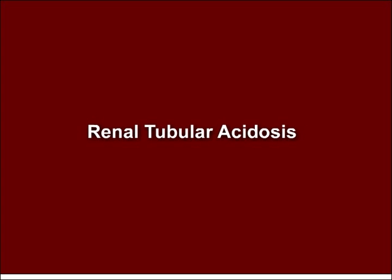Renal tubular acidosis, or RTA, is the result of an inability of the kidney to appropriately acidify the urine. The subsequent accumulation of acid in the body creates a non-anion gap hyperchloremic metabolic acidosis. In this animation, renal physiology will be reviewed, as well as the various types of renal tubular acidosis.